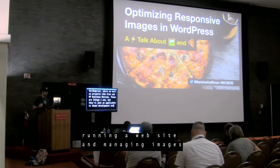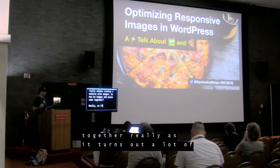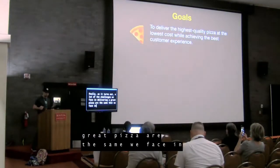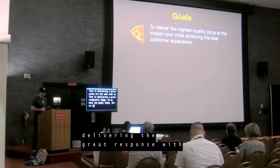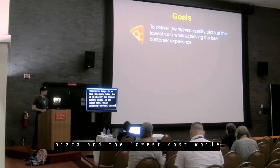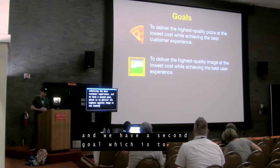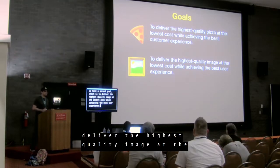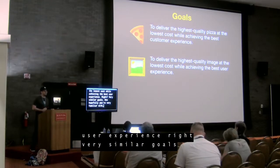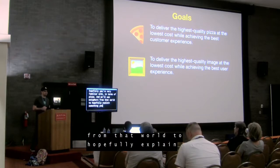So how do images and pizza come together? As it turns out, a lot of the challenges we face in delivering a great pizza are the same we face in delivering a great responsive image. We have two goals today: one is to deliver the highest quality pizza at the lowest cost while achieving the best customer experience. And the second goal is to deliver the highest quality image at the lowest cost while achieving the best user experience. Very similar goals — one you're hopefully familiar with in terms of pizza, and we'll use metaphors from that world to explain image optimization.